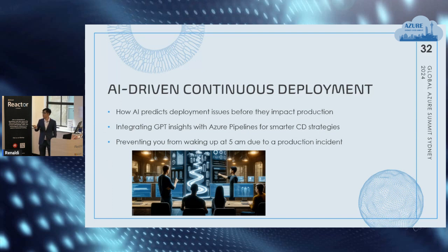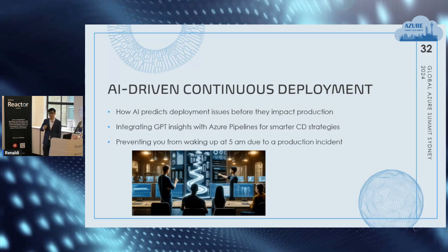That leads us to AI-driven continuous deployment — understanding how AI can predict deployment issues before they impact production, as we saw before. Our eventual goal is really to prevent you from waking up at 5 a.m. due to production incidents. Why solve issues and wake up for them when you can have AI solve them beforehand and quickly resolve them? Often things that wake us up at 5 a.m. are small minor issues or a small bug or configuration change. Having those steps in a pipeline to mitigate that is a great way to prevent this. Integrating GPT insights within Azure pipelines ensures smarter continuous deployment strategies.